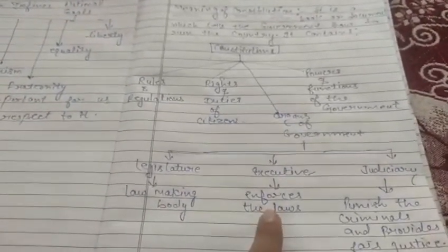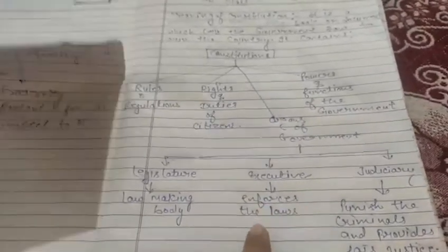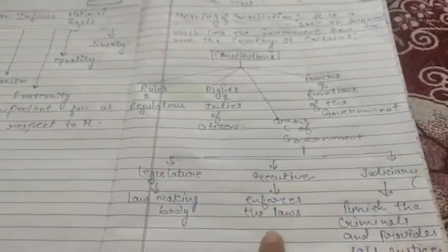Second one is executive. It is a body at the central level that enforces the laws and distributes the duties and responsibilities to the different departments.